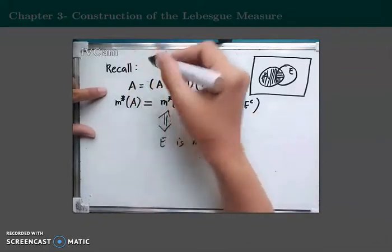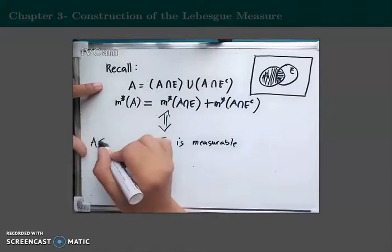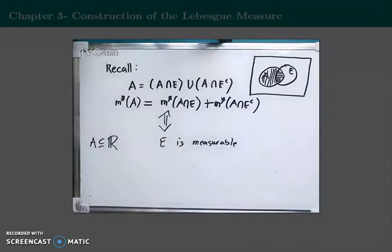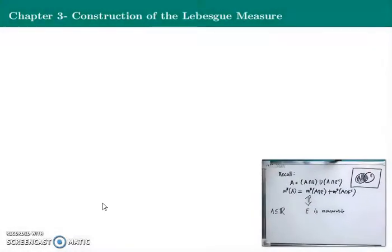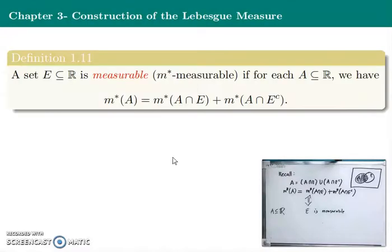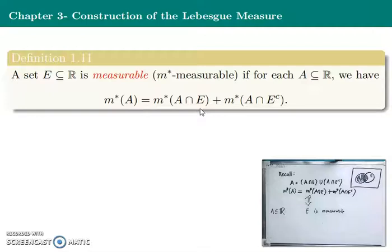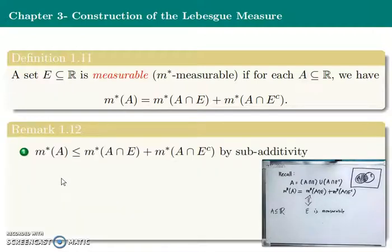Notice that A is a subset of the set of real numbers. So let's define a measurable set. A set E, which is a subset of the real numbers, is measurable if for each subset A of ℝ we have the equality: λ*(A) = λ*(A∩E) + λ*(A∩Eᶜ). If this holds, then we can say that E is measurable, and if E is measurable, this equality will follow.